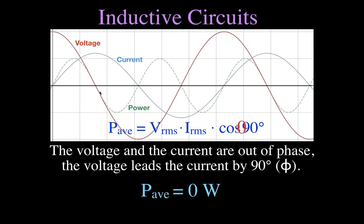I'm going to show you why the average power is zero by looking at the relationship between voltage, current, and power through one cycle, one quarter at a time. For the first quarter cycle, shown by this shaded area, the voltage is positive and the current is positive, so multiplying them gives a positive power for that quarter cycle.